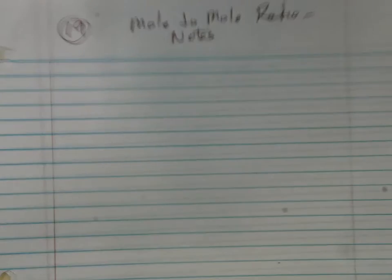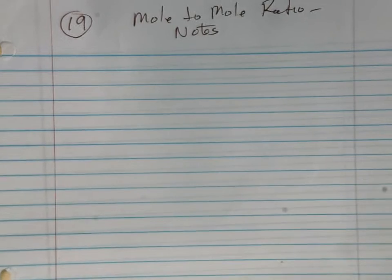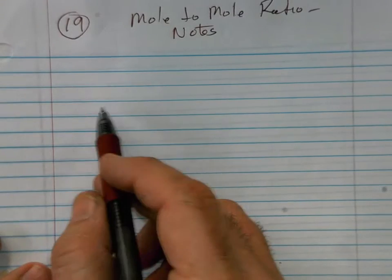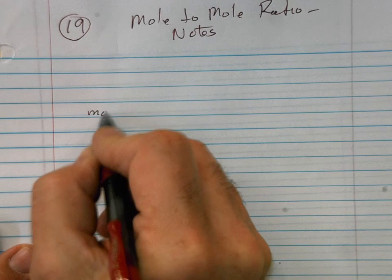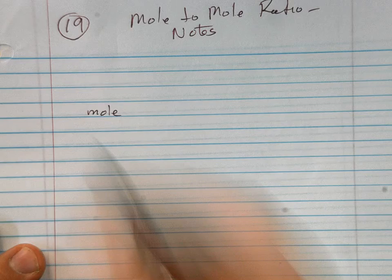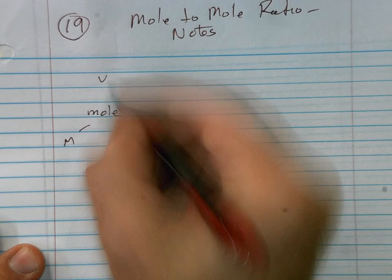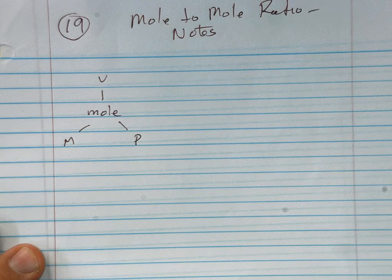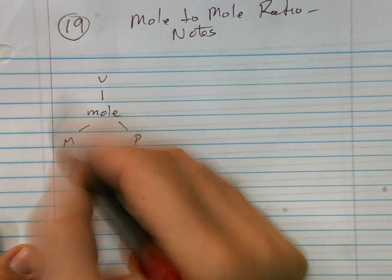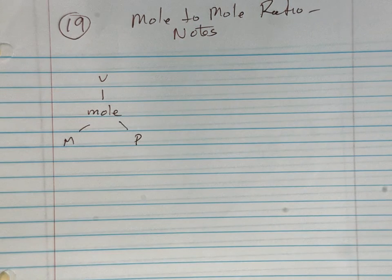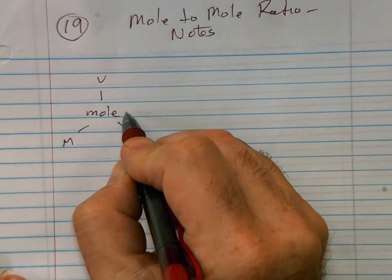First off, let's start by drawing a simple MVP triangle. We'll do mole, mass, volume, and particles. I'm really proud of you all because you did a great job on that last test.